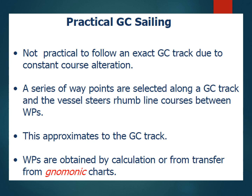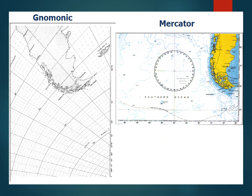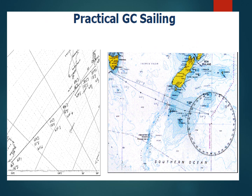Since we can't practically use great circle courses directly, we would have to alter course many times. Looking at the charts here, the gnomonic chart looks like a globe projected with its orthomorphic projections of the meridians. The Mercator chart, although also a cylindrical orthomorphic projection, has its meridians straightened out and parallel to each other. A great circle course is drawn as a straight line on a gnomonic chart.